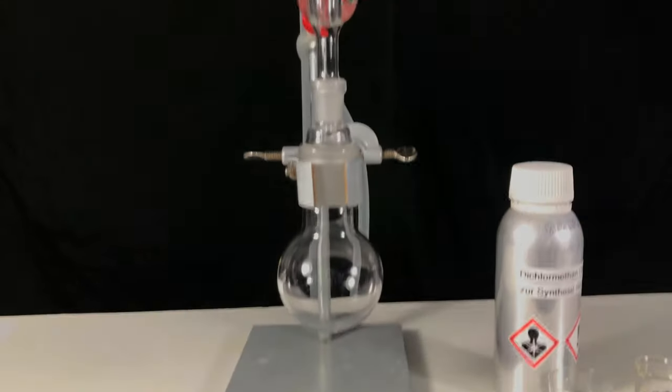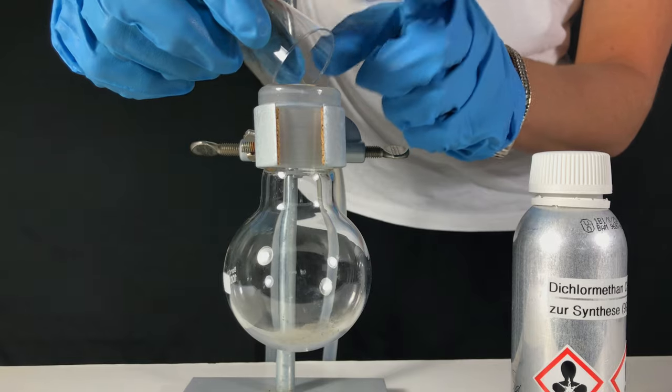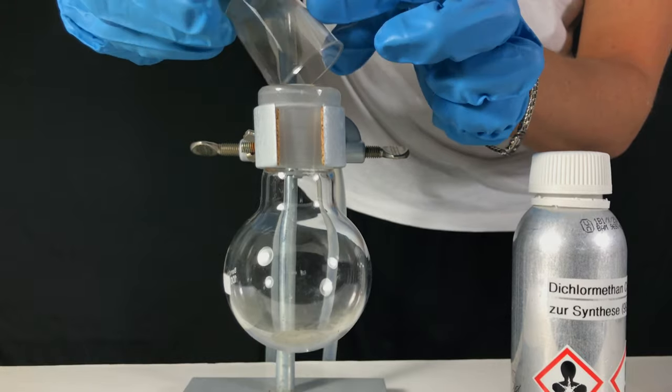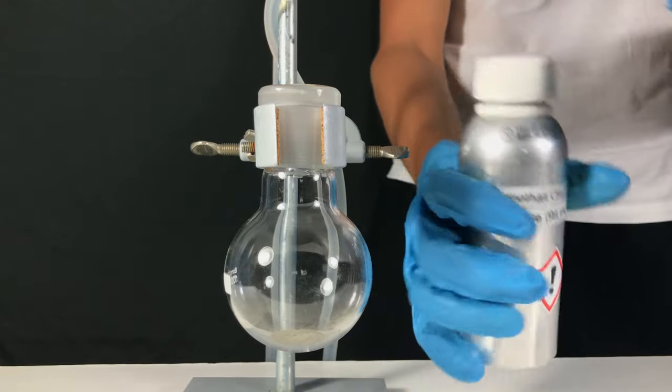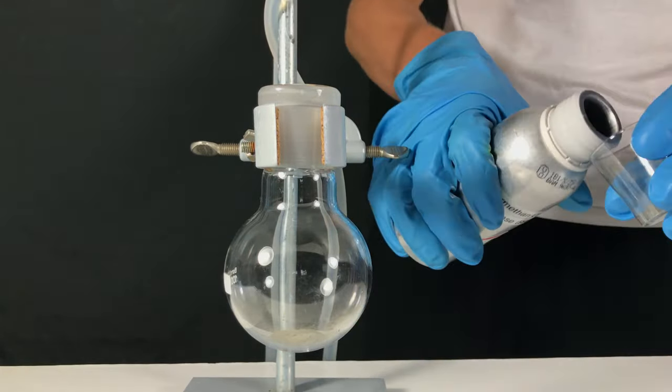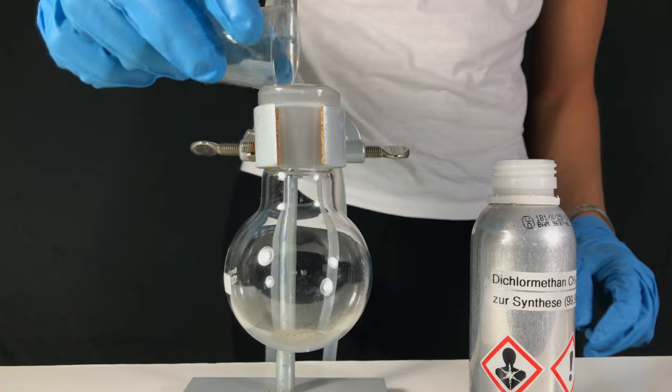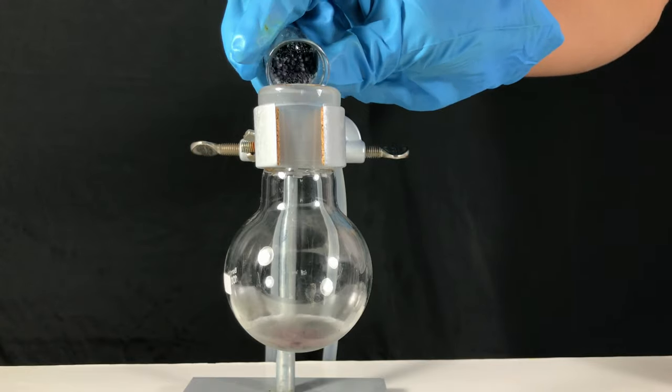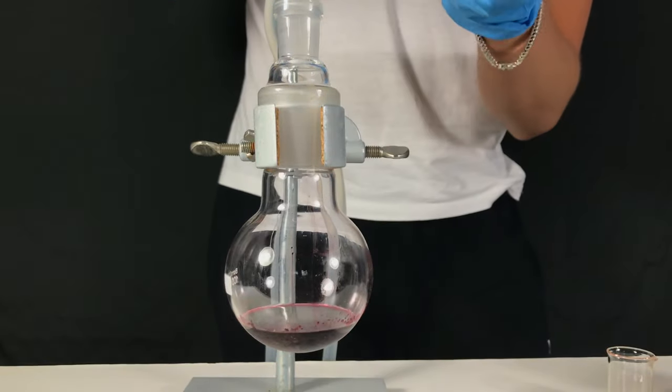A really simple reflux condenser was set up. We started off by transferring the tin powder to a 100 ml round bottom flask. The tin powder was followed by around 20 ml of dichloromethane. Then the iodine was just dumped in. The reflux condenser was quickly put on top of it.